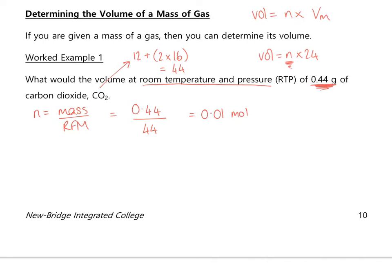Once I have the number of moles, I use volume = n × 24 (at RTP). The number of moles is 0.01, the molar gas volume is 24, so the volume equals 0.24 dm³.